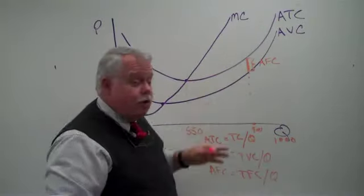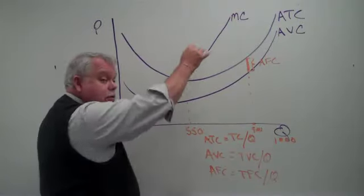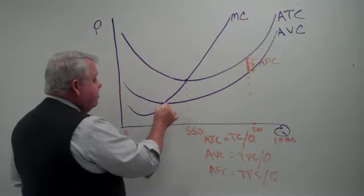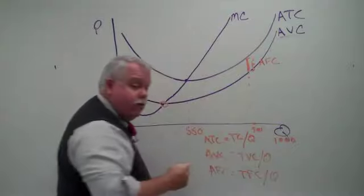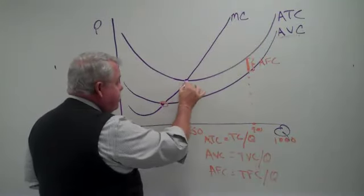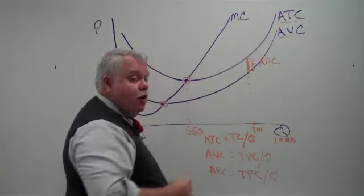Finally, note the marginal cost curve. It's going to start out with a little hook to it and work with a positive slope. It's going to go through the lowest point on the average variable cost curve and then continue on through the lowest point on the average total cost curve and continue to climb.